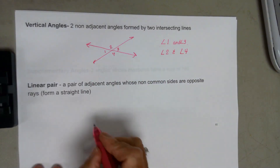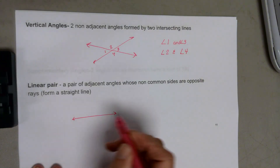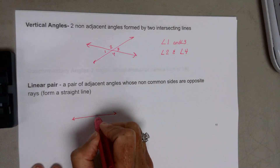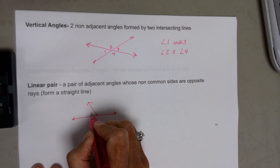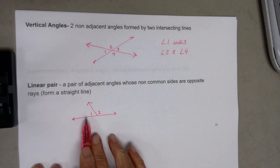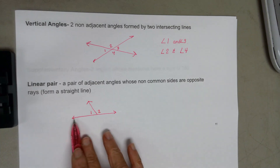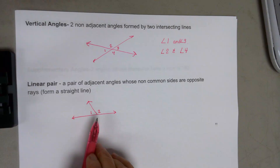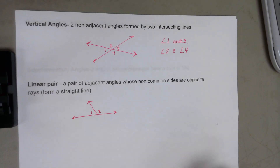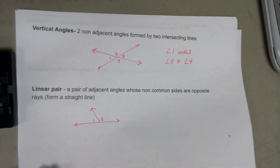A linear pair is a pair of adjacent angles whose non-common sides are opposite rays — in other words, they form a straight line when put together. They have to be right next to each other, and their non-common sides form a straight line. Angle 1 and angle 2 is a linear pair.